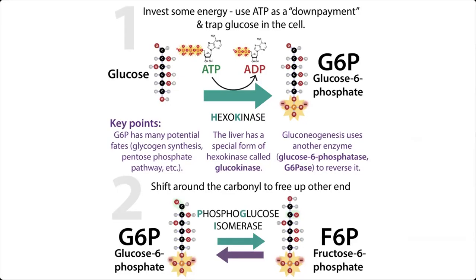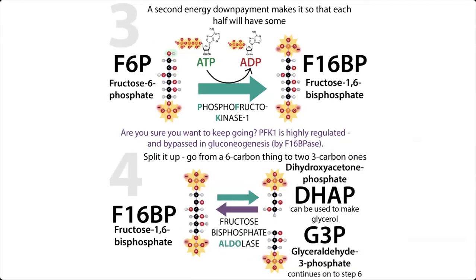To keep carrying it through glycolysis, we need to shift things around so we can phosphorylate the other end as well. When we talk about shifting things around in a molecule, we want an isomerase. Phosphoglucose isomerase is going to allow us to shift the position of our carbonyl so that we free up an alcohol on the end, giving us fructose-6-phosphate, which we can then phosphorylate.